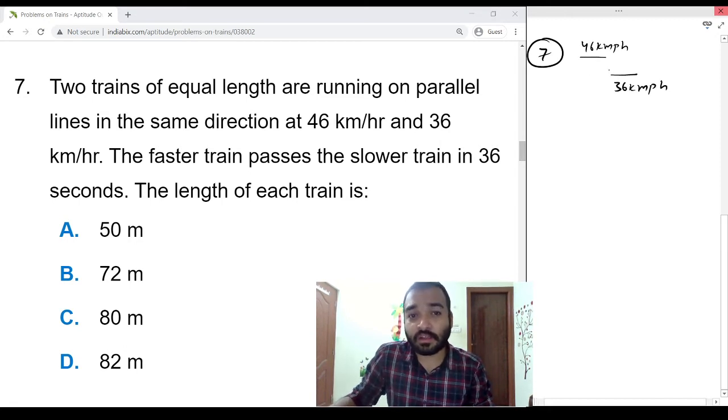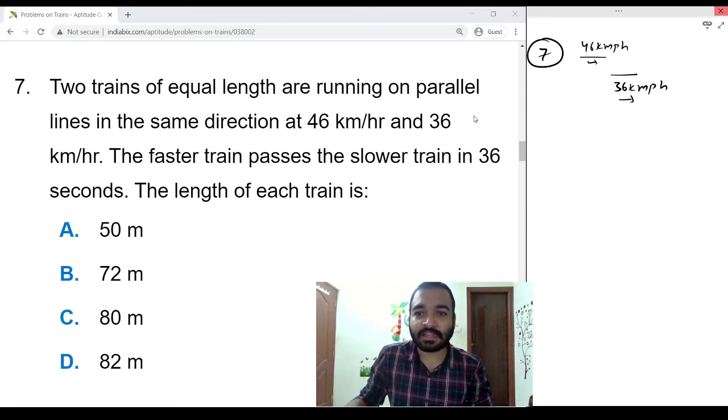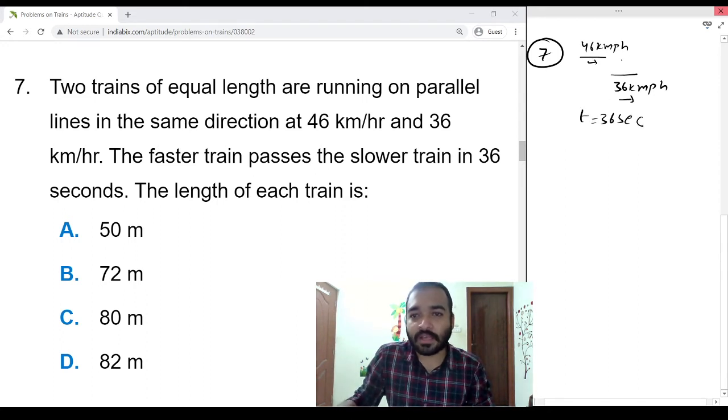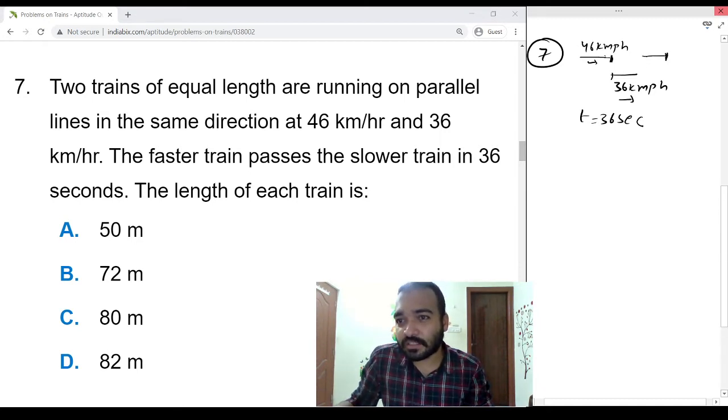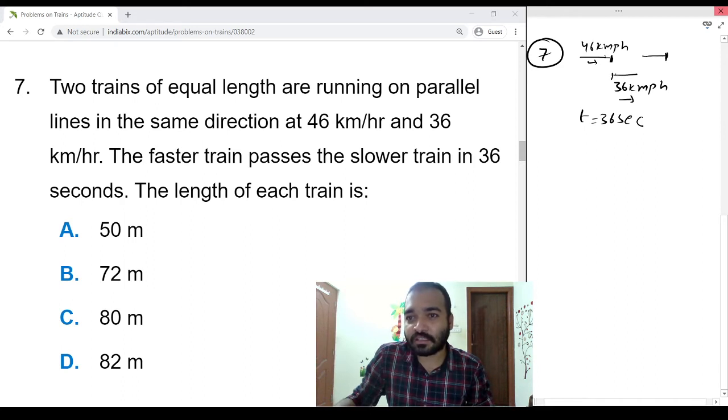They both are running in the same direction. The faster train passes the slower train in 36 seconds. Passes means initially the faster train is here, starting is here. After passing, starting of the faster train will be here, so total distance it covers is this length plus that length, two trains length.